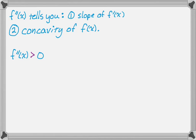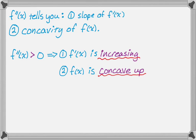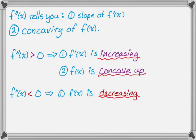If f double prime is greater than zero, we know two things. We know, first of all, that f prime is increasing. And then second of all, we know that f of x is concave up. And if f double prime is negative, we know two things again. We know f prime is decreasing. But we also know that f of x is concave down.